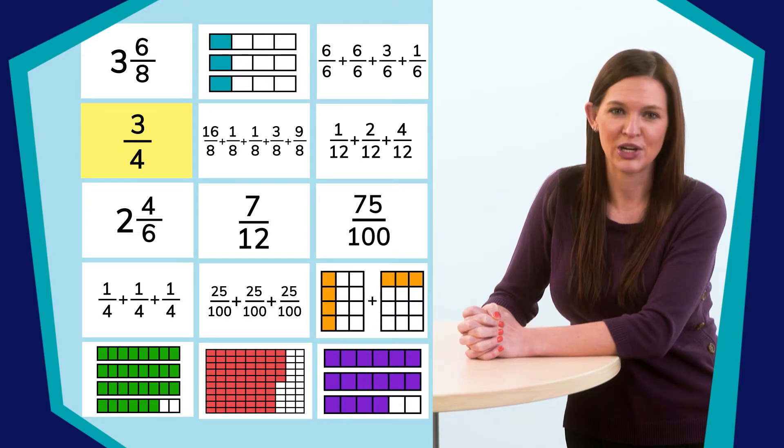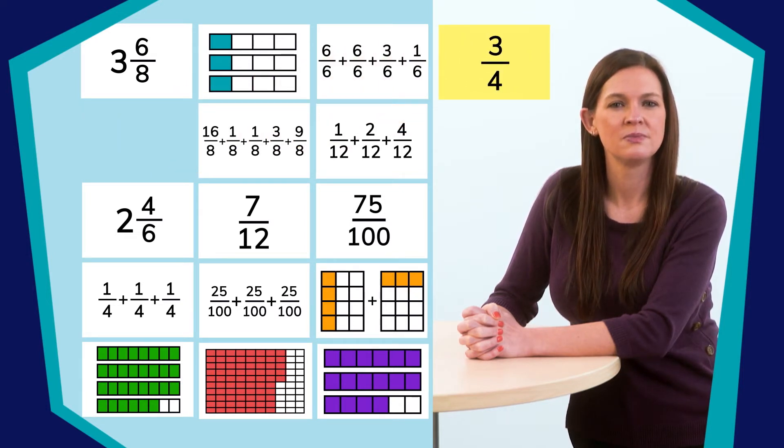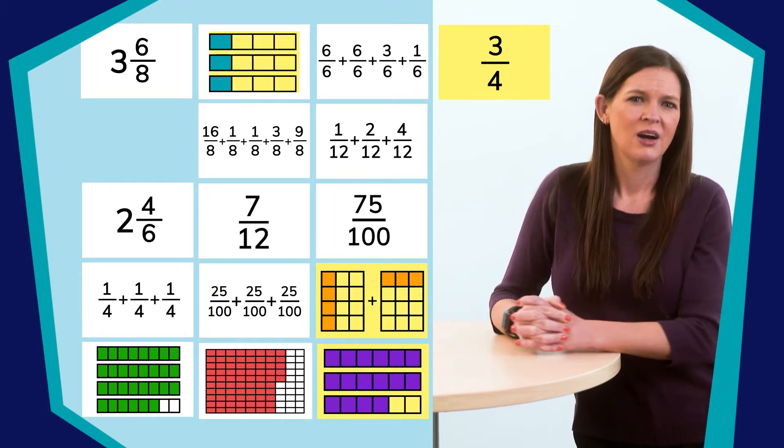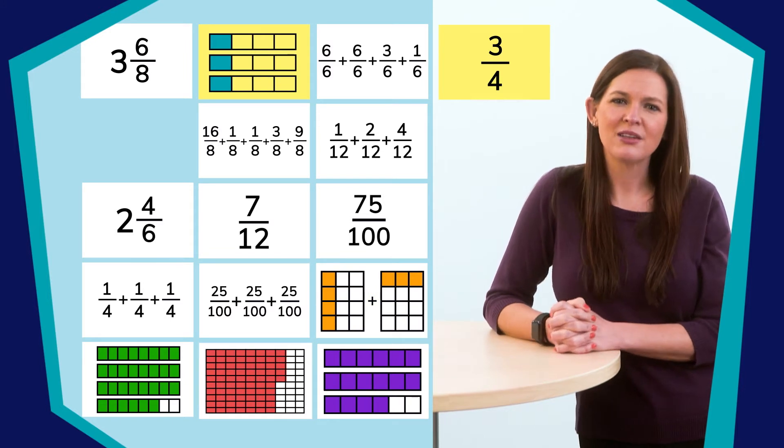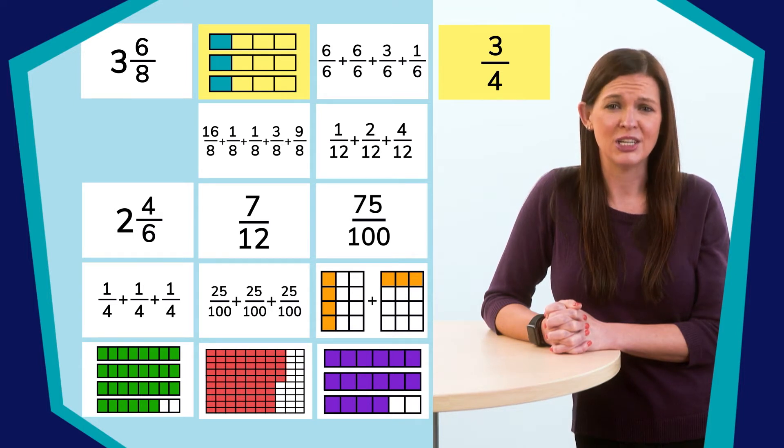Which of these models shows 3 fourths? This model is showing twelfths, and this one is showing sixths. Oh, look at this one. The model is showing three length models. Each one is divided into fourths, and there is one fraction colored in each model.